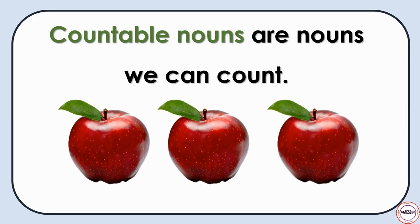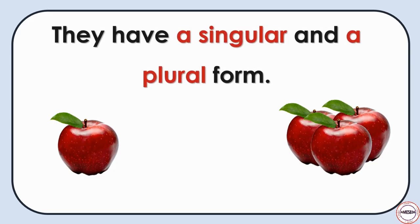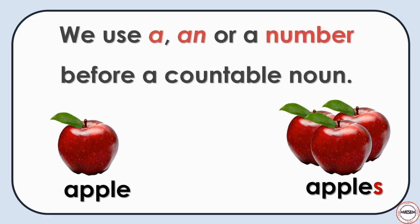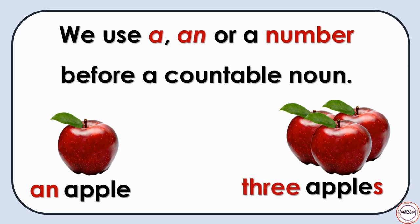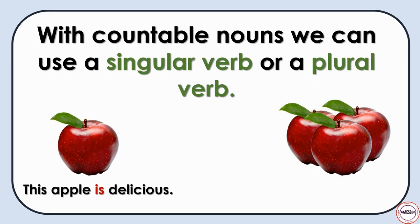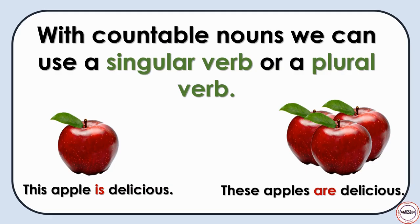Countable nouns are nouns we can count. They have a singular and a plural form: apple, apples. We use a, an, or a number before a countable noun — an apple, three apples. With a countable noun, we can use a singular verb or a plural verb: This apple is delicious. These apples are delicious.